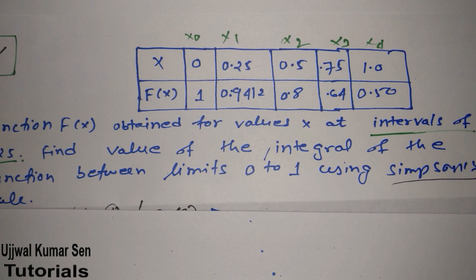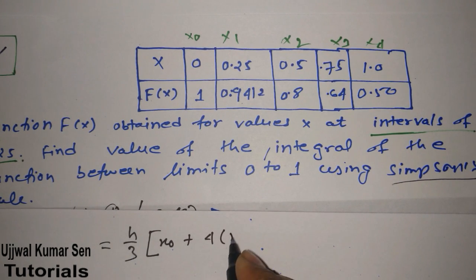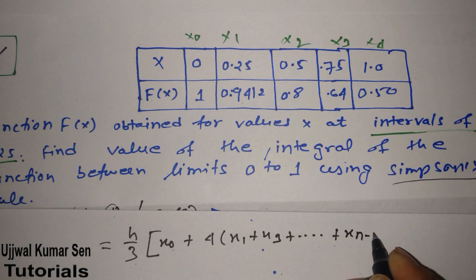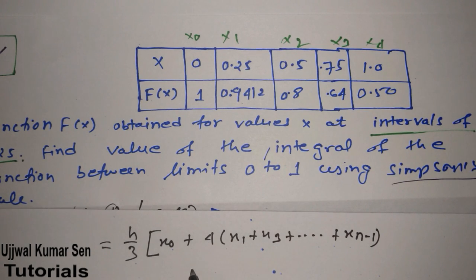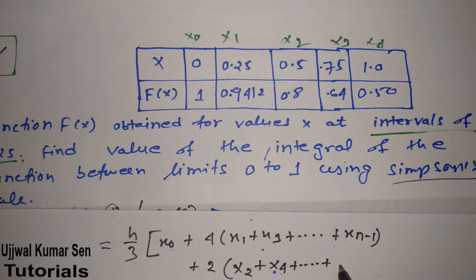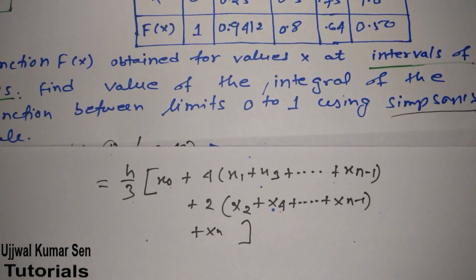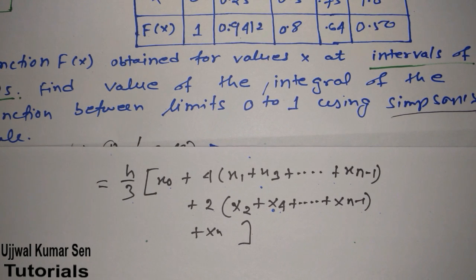There is a formula for finding the solution of this problem by using Simpson's one-third rule. The formula is: h by 3 times [x naught plus 4 times (x1 plus x3 plus dot dot dot plus x n-1) plus 2 times (x2 plus x4 plus dot dot dot plus x n-2) plus xn]. This is the formula for finding the solution of this problem by using Simpson's 1 by 3 rule.